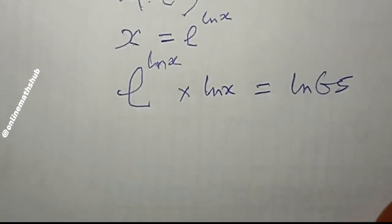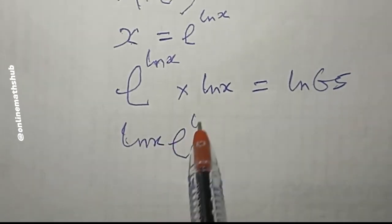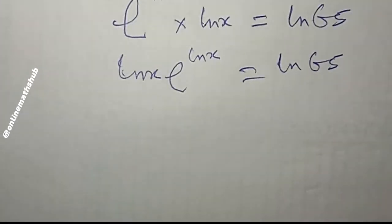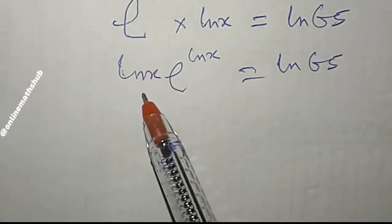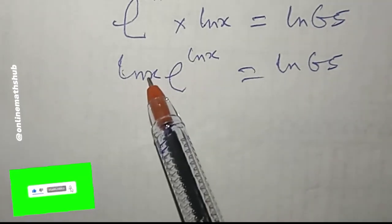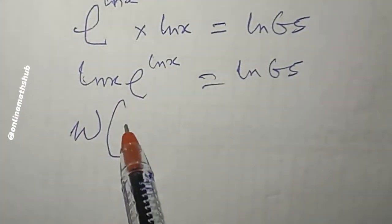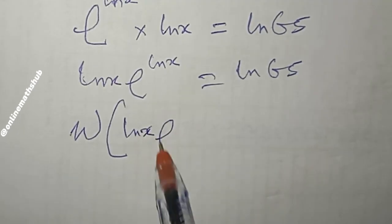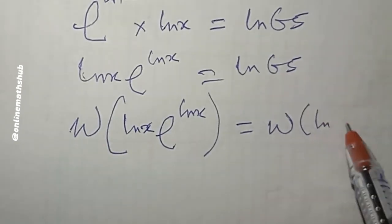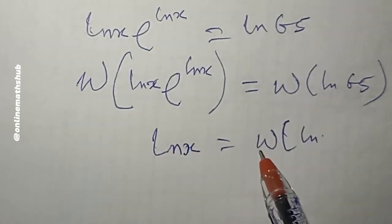The next thing I do is rearrange so I have: ln(x) · e^(ln x) = ln(65). You can now see that we have a function in the form a·e^a, where a is ln(x). I can now apply the Lambert W function: W(ln(x) · e^(ln x)) = W(ln(65)), and the left side collapses to give: ln(x) = W(ln(65)).